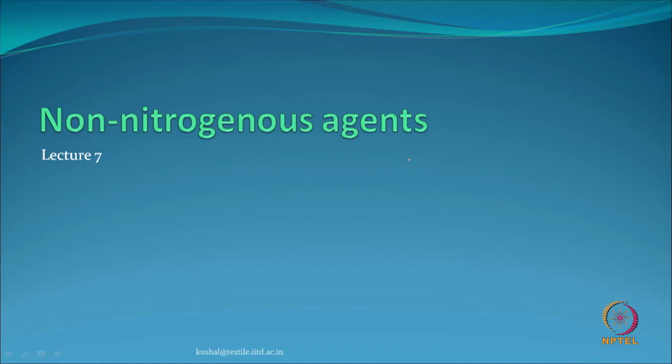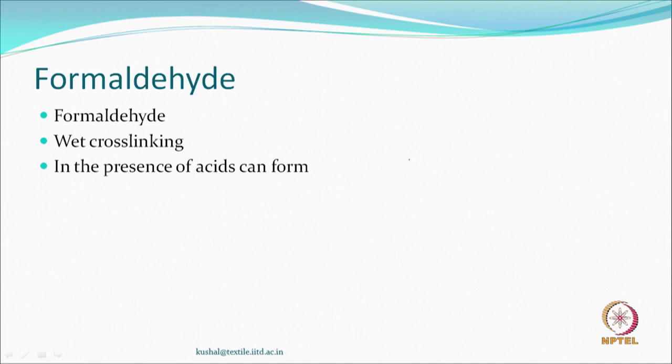Today we will discuss some of the non-nitrogenous agents which can be used for cross-linking. Interestingly, the formaldehyde which has been used to prepare N-methylol compounds can itself be used for cross-linking. This compound in acidic solutions can react with cellulose hydroxyl groups at lower temperatures. We may not like to go for a pad-dry-cure process because formaldehyde may get evaporated.